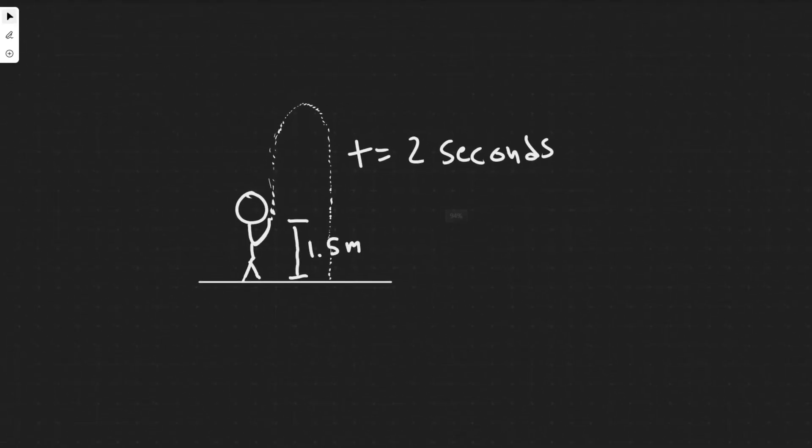It's important to understand what we have going on here first before we actually try solving. So we have this guy, and he's going to be firing this water in a pattern like this, and we know he starts firing it 1.5 meters above the ground. So from where it starts to where it ends is 1.5 meters difference.